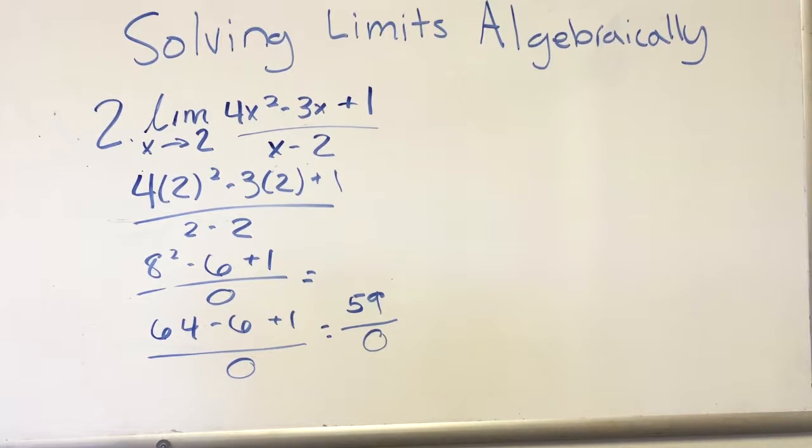Once you have finished simplifying the problem, you will notice that there is a number on the top and a zero on the bottom. This means that there will be a vertical asymptote when x approaches 2.